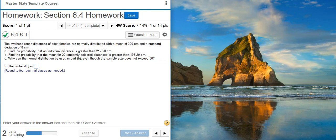Part A says, find the probability that an individual distance is greater than 212.5 centimeters.